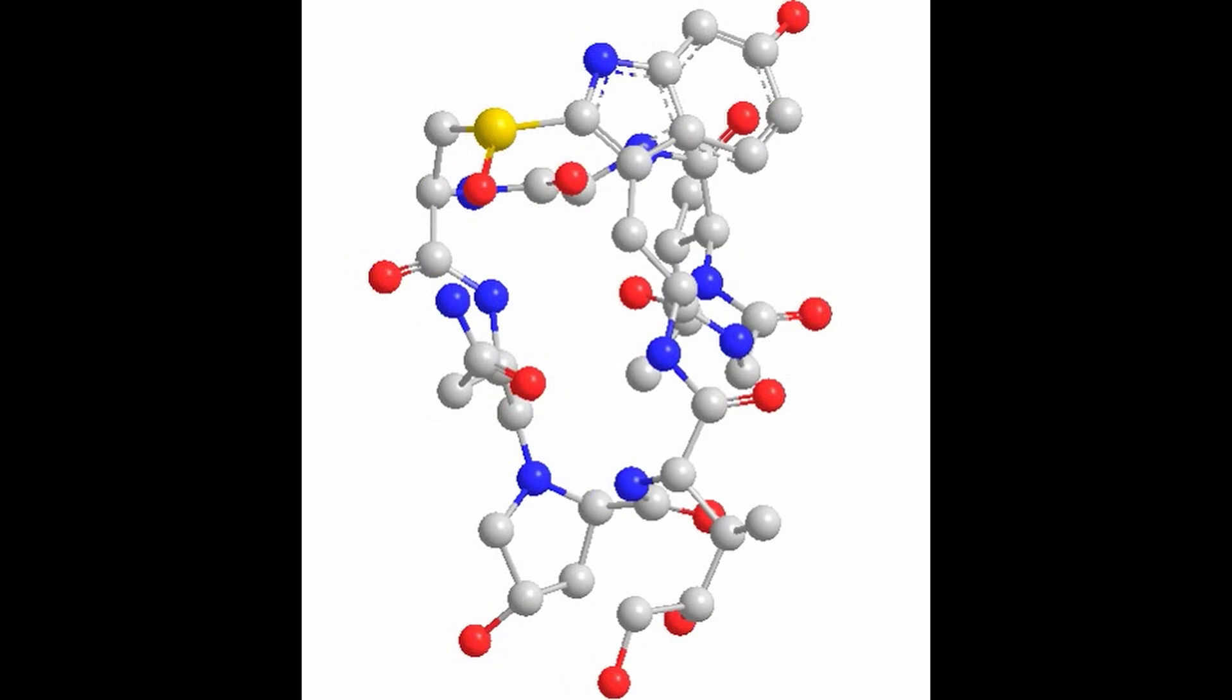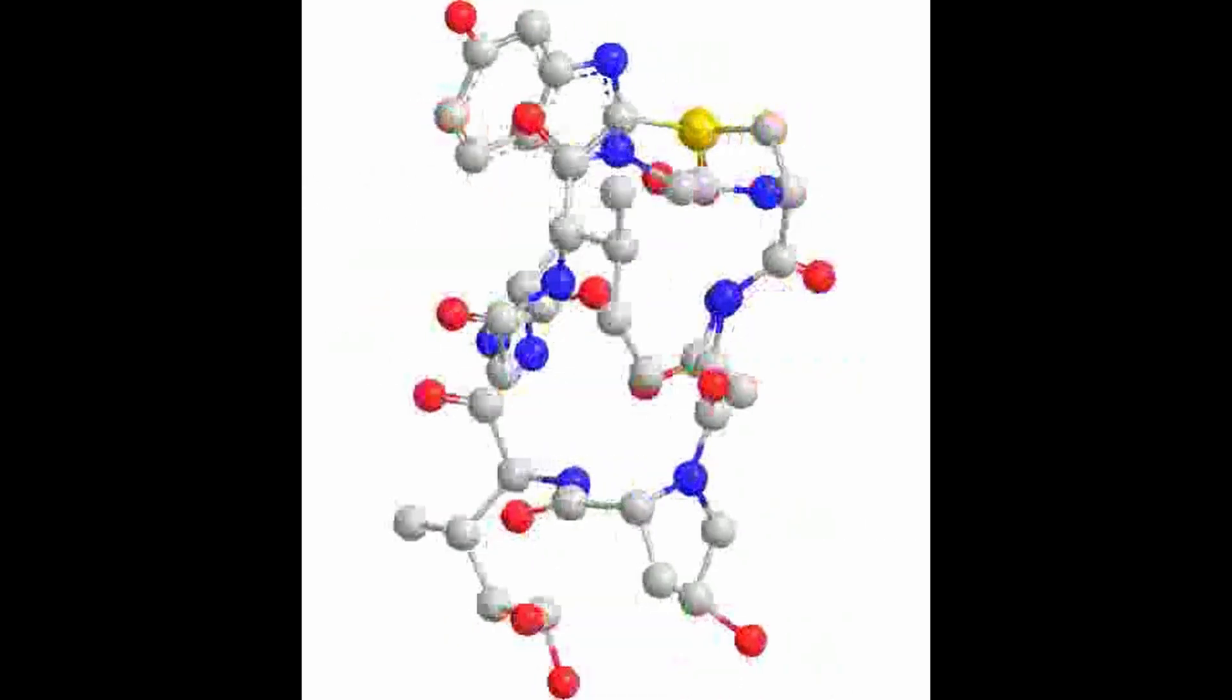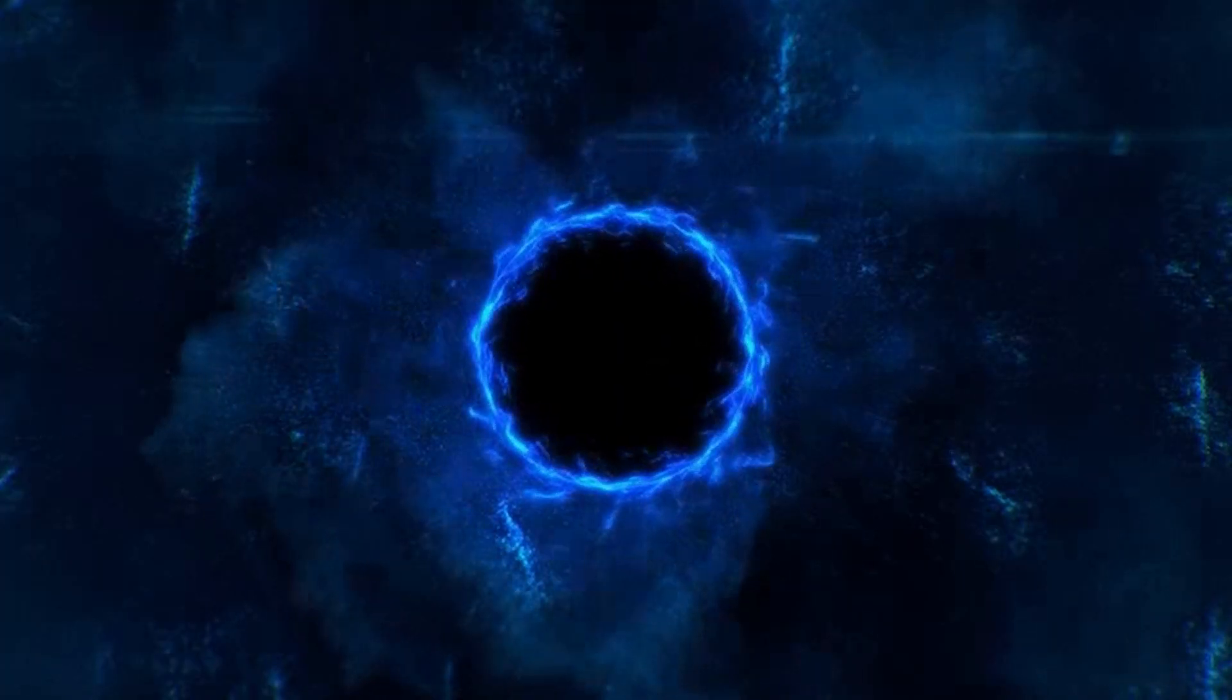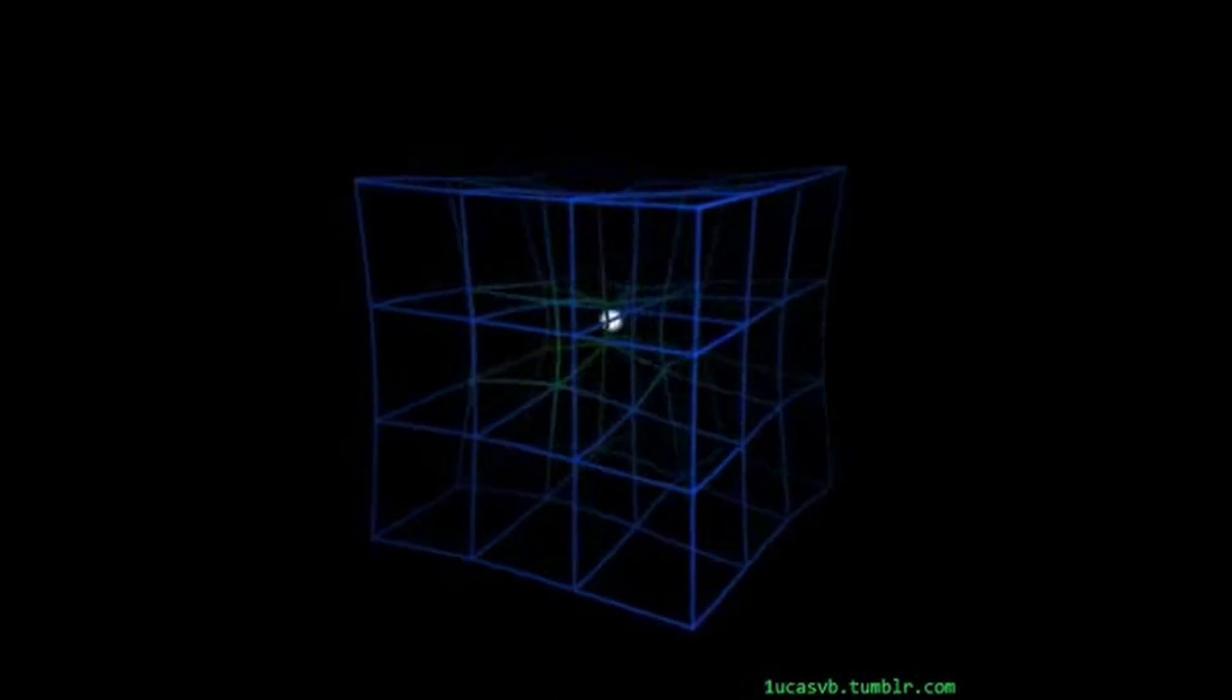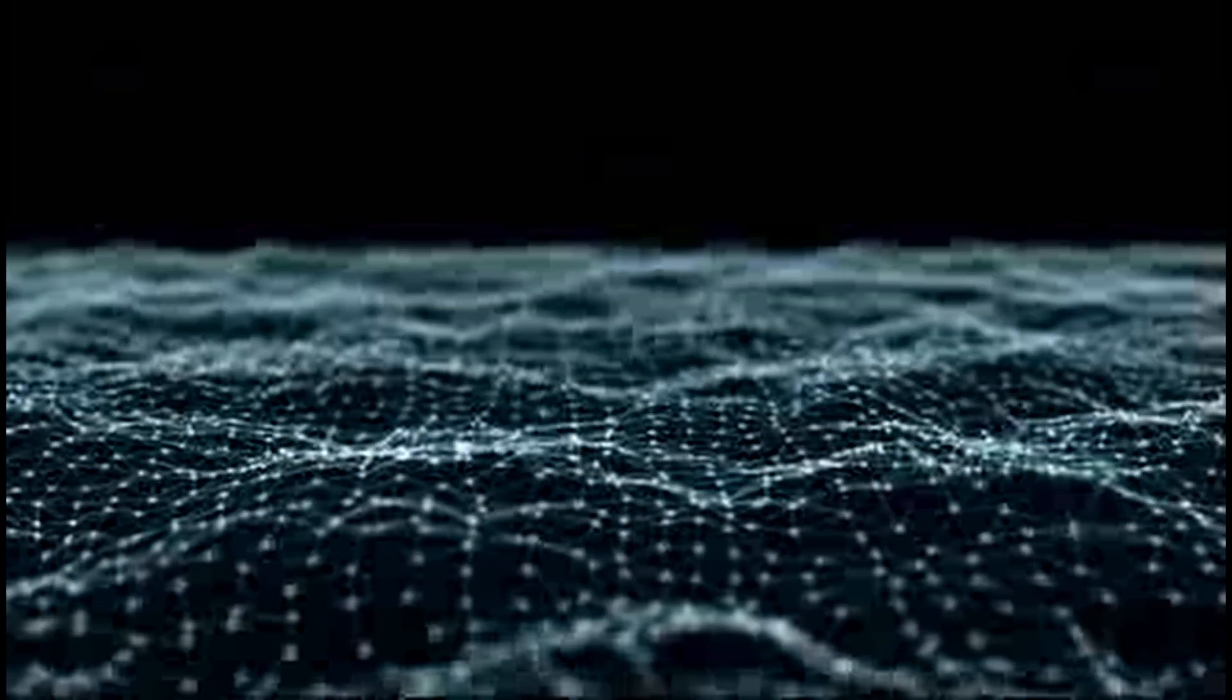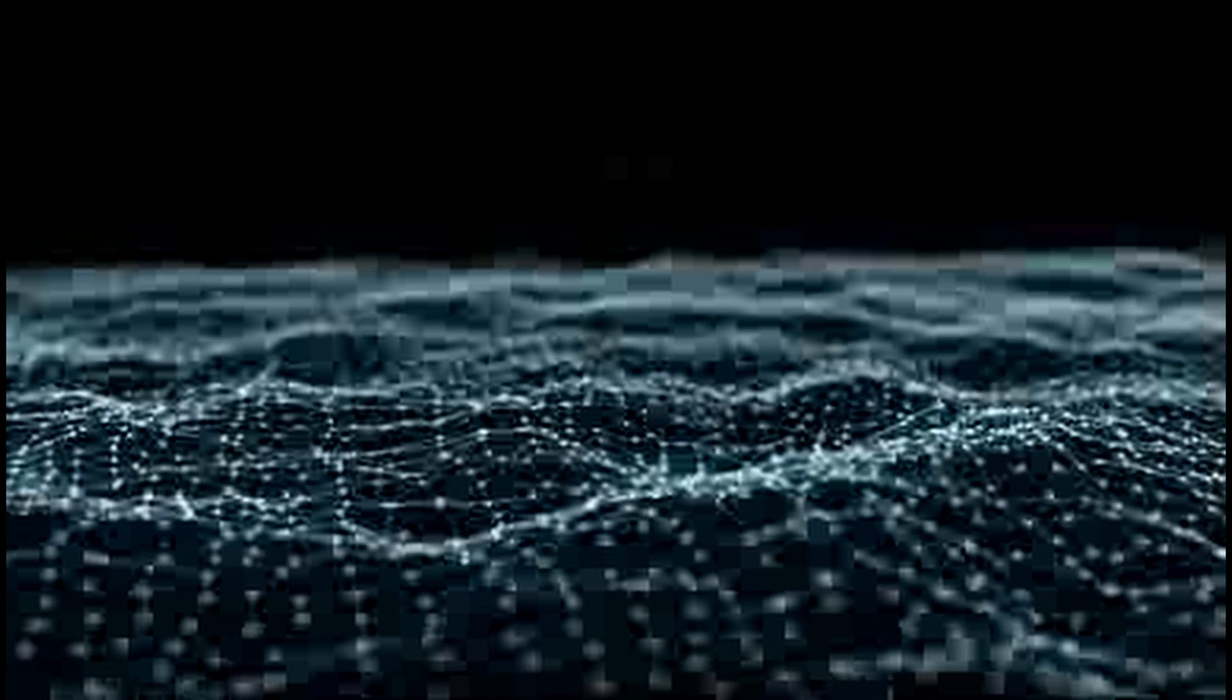Harmonic analysis is a branch of mathematics that studies the connections between a function and its representation in frequency. It uses tools such as Fourier series, Fourier transforms, and other generalizations to decompose complex functions into simpler components that are sine and cosine terms. These components are called harmonics, and they reveal the frequency characteristics of the function. Harmonic analysis has many applications in physics, engineering, and mathematics, such as analyzing sound waves, electric currents, tides, machine motions, and more.